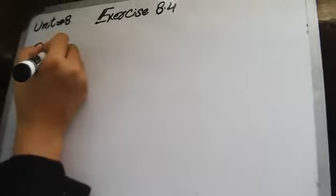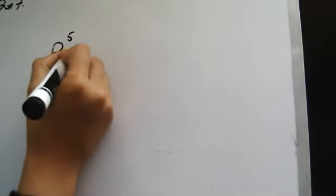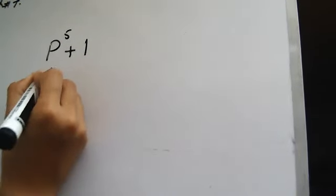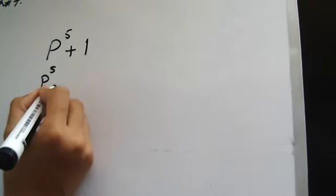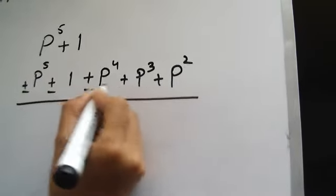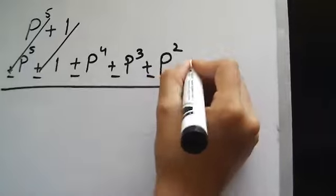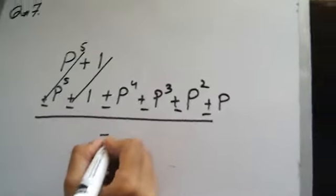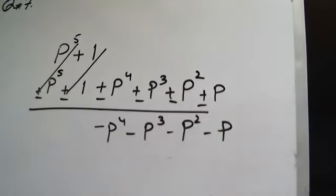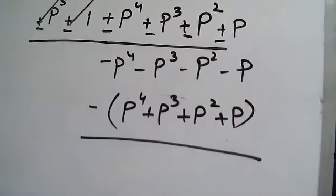Question 7: What must be subtracted from p⁵ plus p⁴ plus pq plus p plus 1 to get p⁵ plus 1? Arrange p⁵ and the constant plus 1; separate the remaining values p⁴ plus pq plus p² plus p. Sign change: plus and minus values cancel out. The answer is minus p⁴ minus pq minus p² minus p.